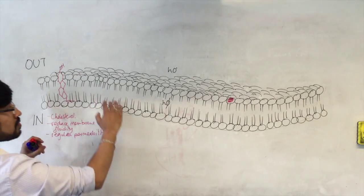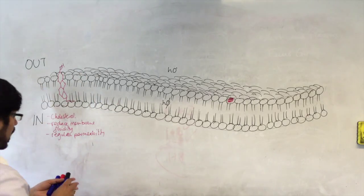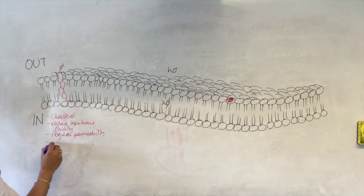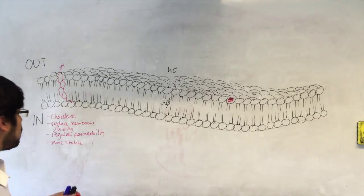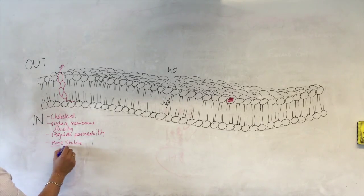By reducing the fluidity of the membrane, A, you reduce its permeability, and B, it provides more stability. It makes the membrane more stable, less likely to break. Let's just stick to these words, it makes the membrane more stable.